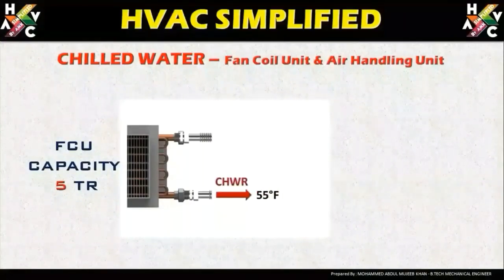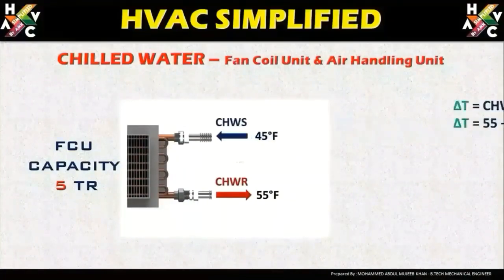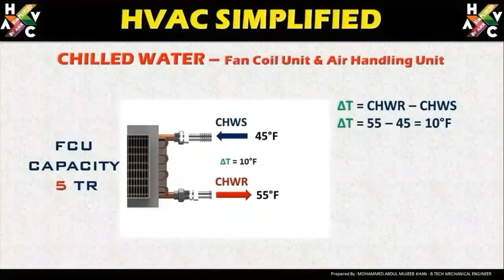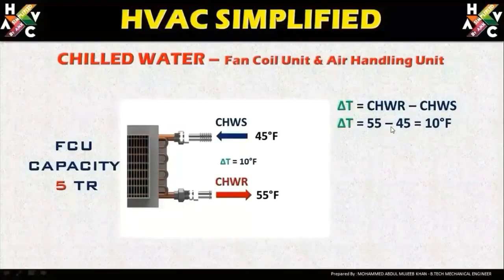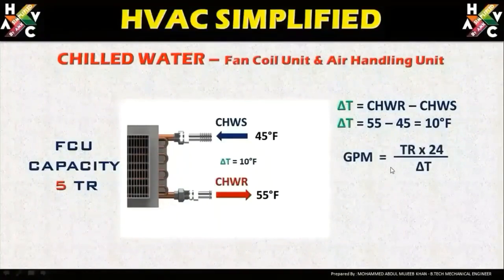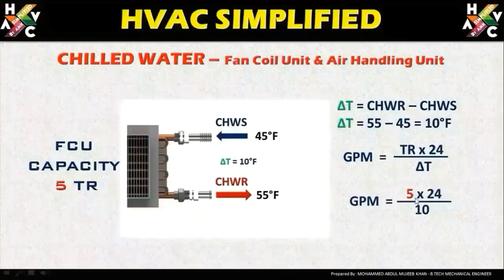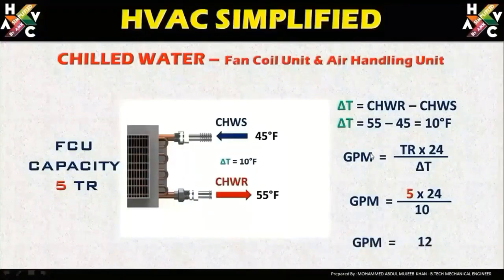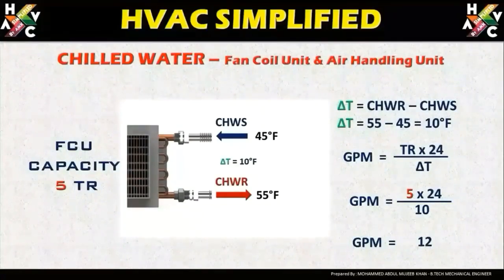Another criterion we need is the chilled water return and chilled water supply temperatures. Here we take the chilled water return as 55°F and the chilled water supply as 45°F. So delta T = 55 − 45 = 10°F. Using the formula GPM = TR × 24 / ΔT, we get 5 × 24 / 10, which equals 12 GPM. So the required GPM for this fan coil unit is 12, and this is how you derive GPM for any fan coil unit or air handling unit.